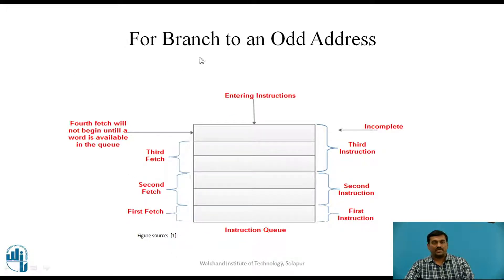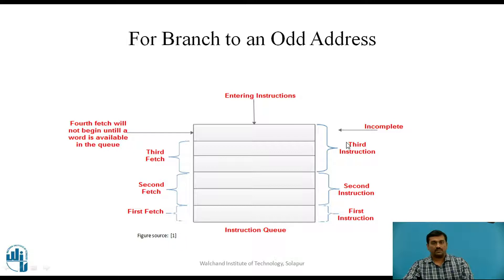For the second case — branch to an odd address — in contrast to the even address case, the first fetch will be of only one byte instead of a word. The next and third fetches will each be of two bytes. Because of this, the first and second instructions are completely present in the instruction queue, whereas the third instruction is incomplete. In this case, the fourth fetch will not begin until a word is available in the queue — meaning that unless the first two bytes are released to the execution unit, the fourth fetch will not begin. This is the behavior for branching to an odd address.